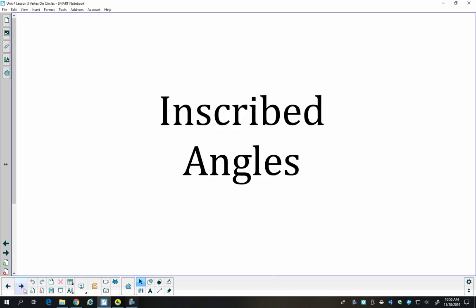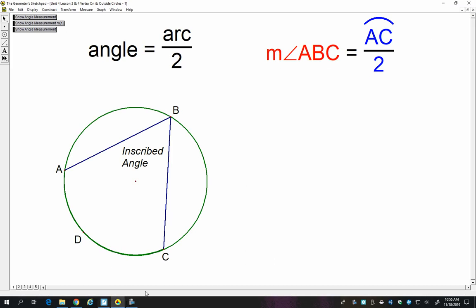The first type of special angle we'll talk about are inscribed angles. So I have an example of that right here. This angle, angle ABC, is an inscribed angle because it's formed by two chords, chord AB and chord BC, and its vertex is on the circle, vertex B.